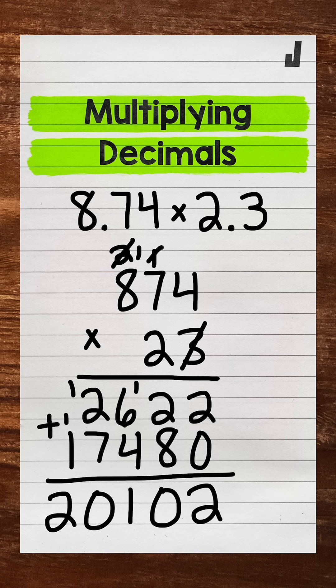And lastly, our third step, we need to place the decimal in our answer. We do that by looking back at the original problem and seeing how many decimal digits we have. So how many digits are to the right of a decimal? Well,